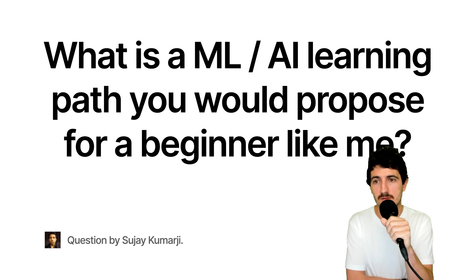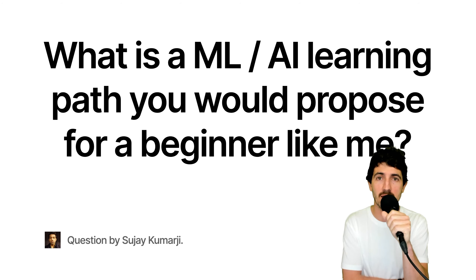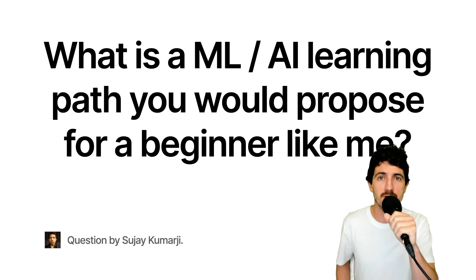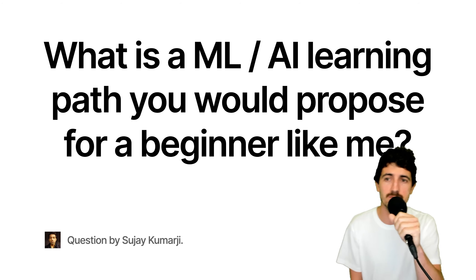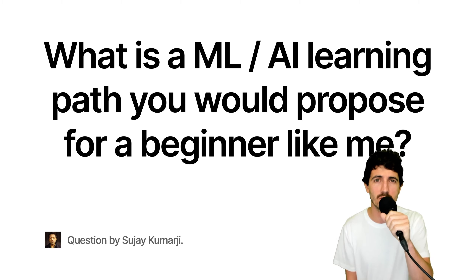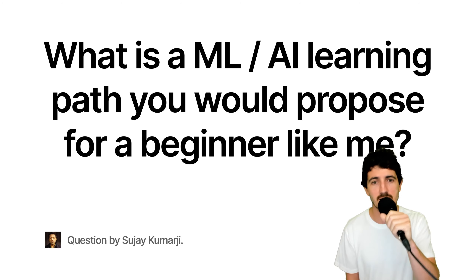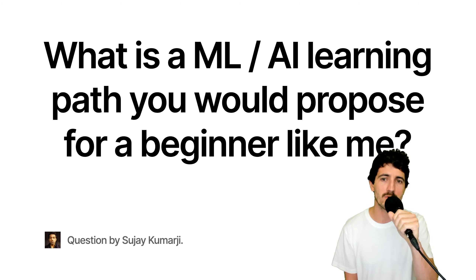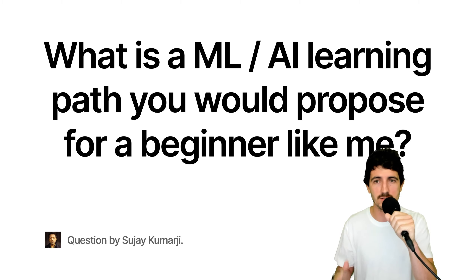One thing that really helped me out is watching courses online. One I would recommend, that I'm halfway through, is the Stanford CS231N course. That course goes through neural networks and convolutional neural networks, but it also covers a lot of other stuff — computer vision problems and concepts, and later things like object detection and segmentation — at least covering the overall concepts.